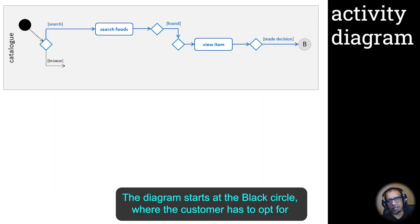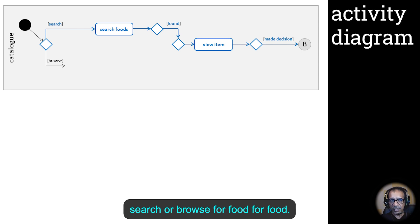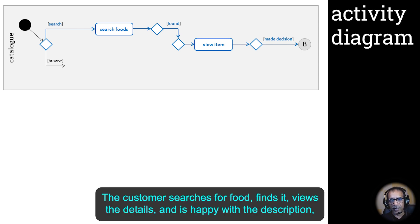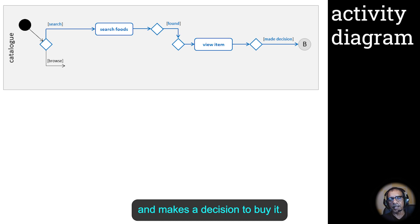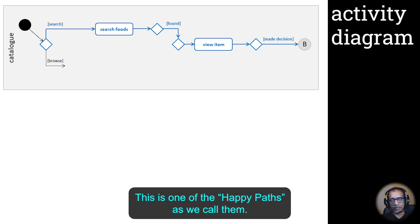This diagram starts at the black circle, where the customer has to opt to search or browse for food. The customer searches for food, finds it, views the details, and is happy with the description and makes a decision to buy it. This is one of the happy paths as we call them.